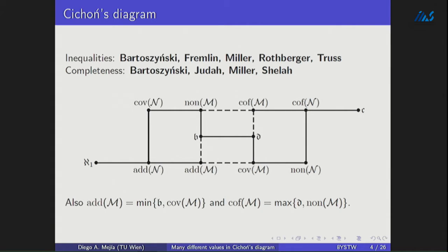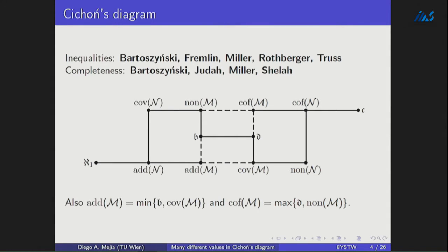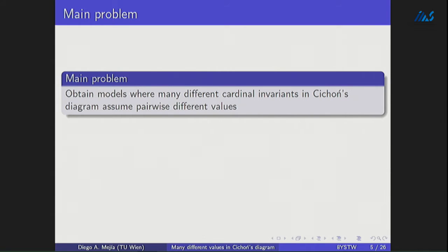Additionally, we have this characterization of the additivity of meager and the cofinality of meager. Regarding separating, mainly for the models of completeness, we know that for any configuration consistent with the diagram, you can construct a model where the cardinals take just two values. Most of these techniques use countable support iteration of proper forcings. But now, I am very interested in obtaining models where you can get much more different values for Cichoń's diagram. Using countable support iterations of proper forcings only allows the continuum to be ℵ₂, so this is discarded because it doesn't allow three or more values.